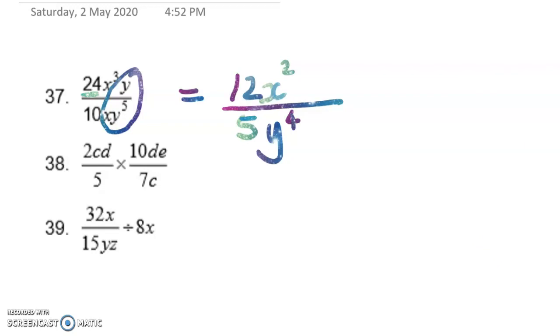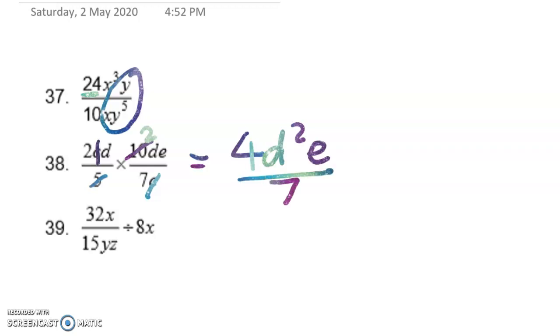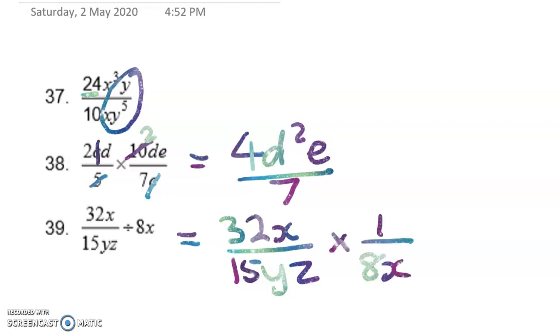Next up, I've got another of these ones where I have to multiply the fractions. So let's see what we get here. So if I look, I'm going to do this the way where I look for common factors across the fractions. The c's will simplify out. And then 10 ÷ 5 = 2. So here I've got 4d²e/7. You could also do that by multiplying the numerator, multiplying the denominator, and then simplifying. In this next one, we've got 32x/15yz divided by 8x is the same as times 1/8x. So now we're going to simplify here, here, and here. That leaves me with 4/15yz.